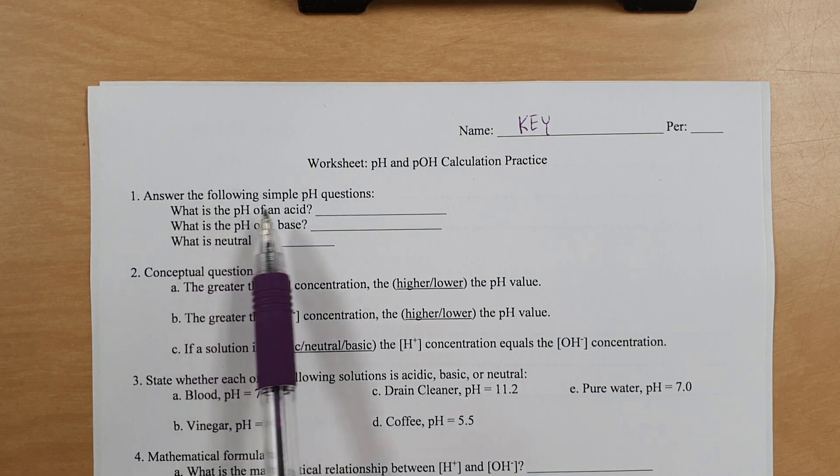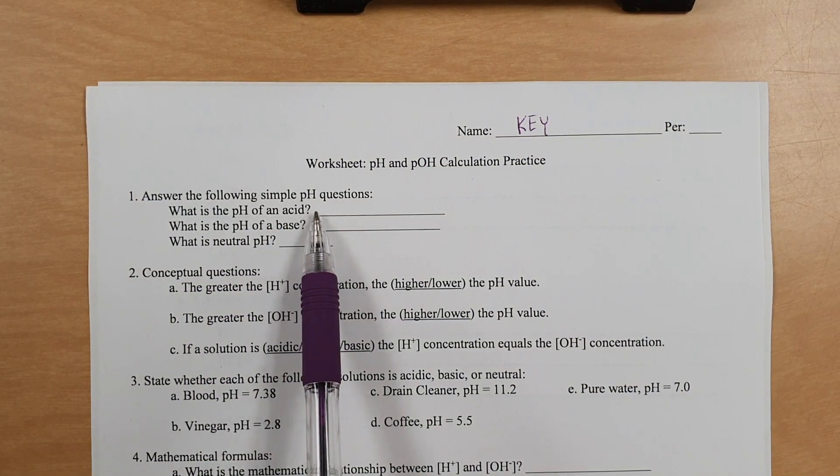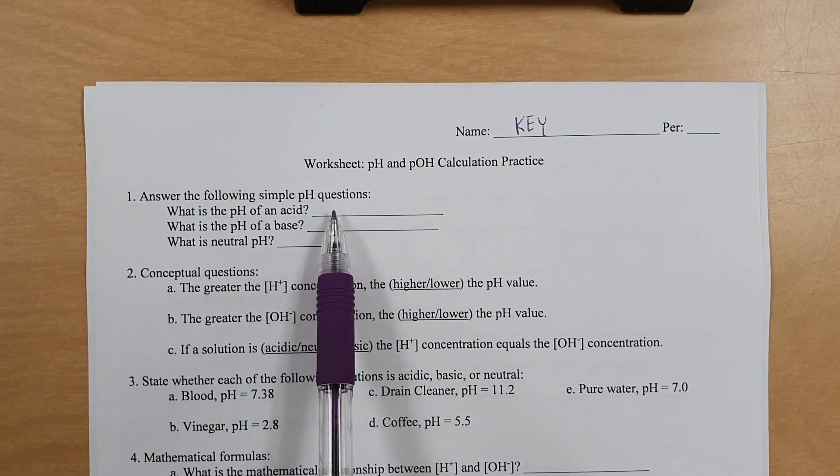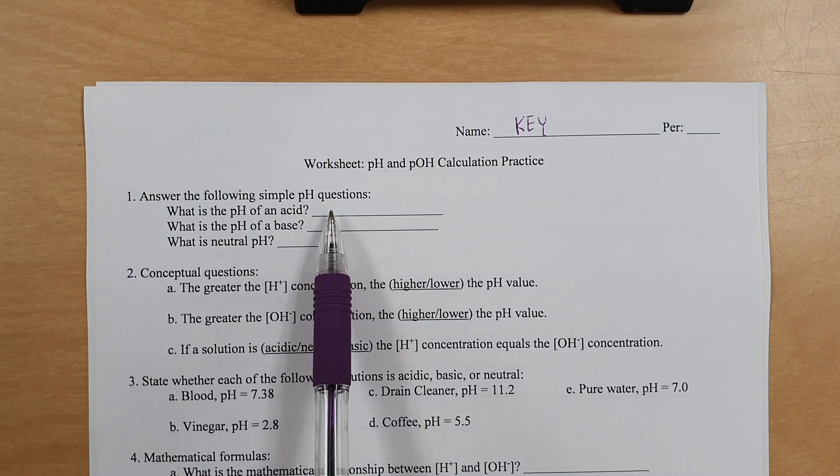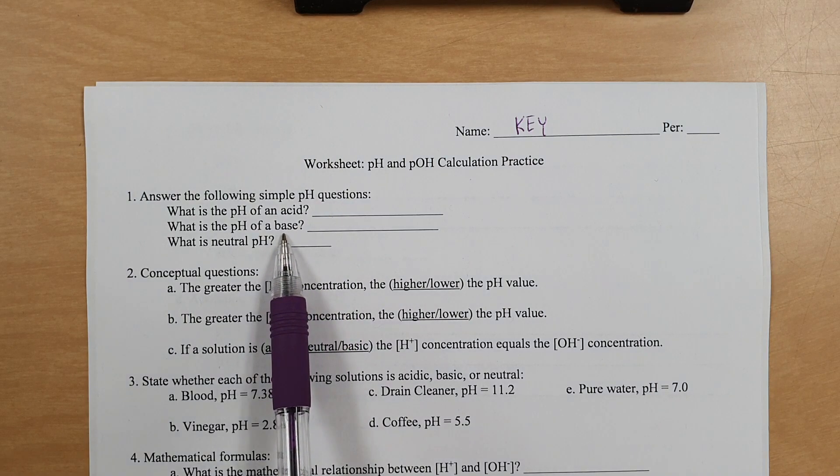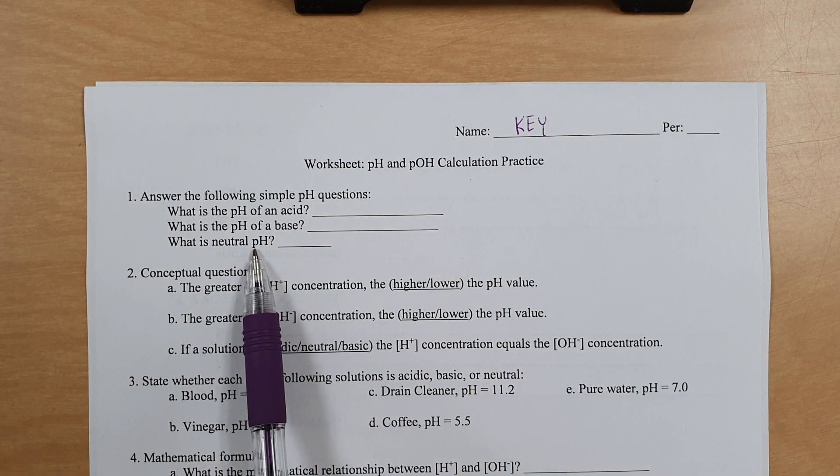What is the pH of an acid? Any pH less than 7. That's right, less than 7. Not 0 to 6 or something like that, less than 7. This is any pH greater than 7, and this is any pH that is 7.